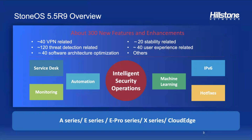At a glance, StoneOS 5.5 R9 brings plenty of updates to the table, from countless VPN, stability, user experience, threat detection, software architecture optimization, and other types of optimizations. Ultimately, StoneOS will be able to produce a comprehensive intelligent security operation system that functions the way we want it to. A list of models that will benefit from this StoneOS iteration can be found at the bottom of this slide.